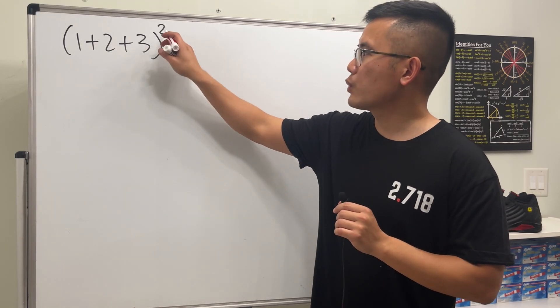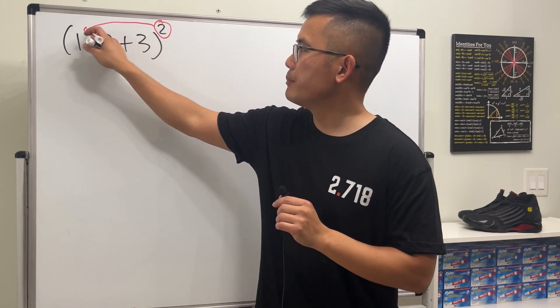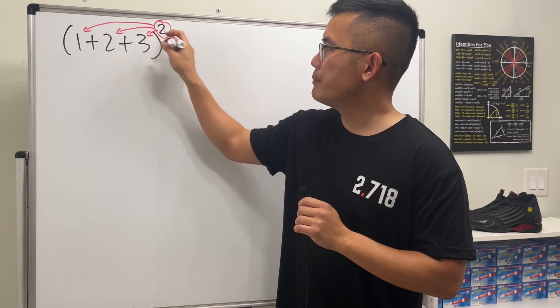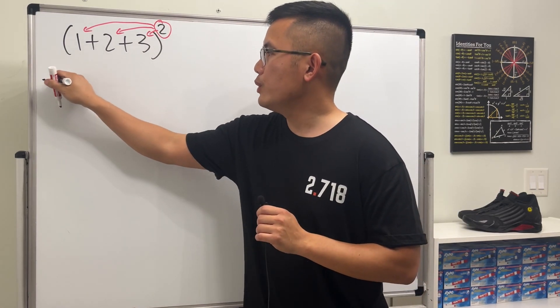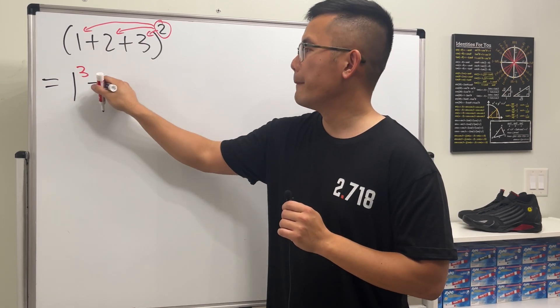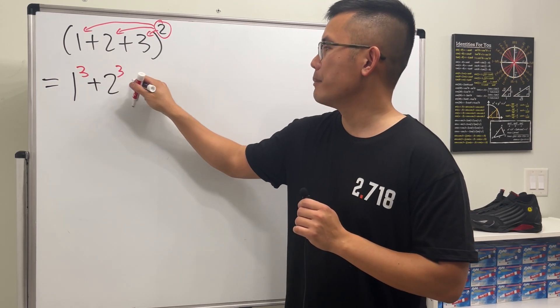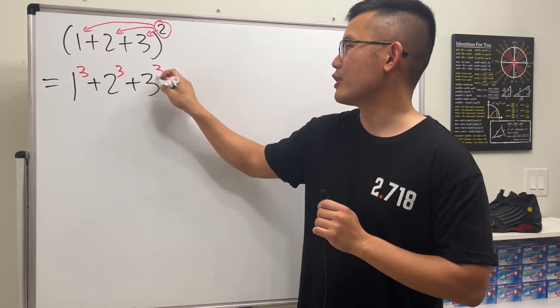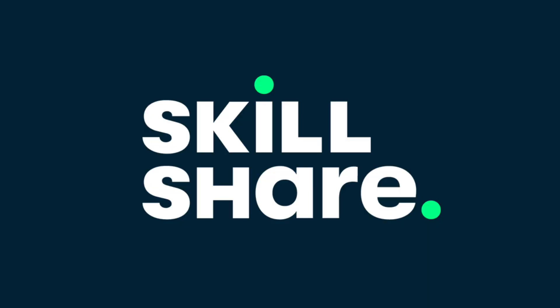When we have 1 + 2 + 3 squared, we can take the 2 and put it here, put it here, and put it here, but we will have to change the 2 to a 3. So we have 1³ + 2³ + 3³. Thanks to Skillshare for sponsoring this video.